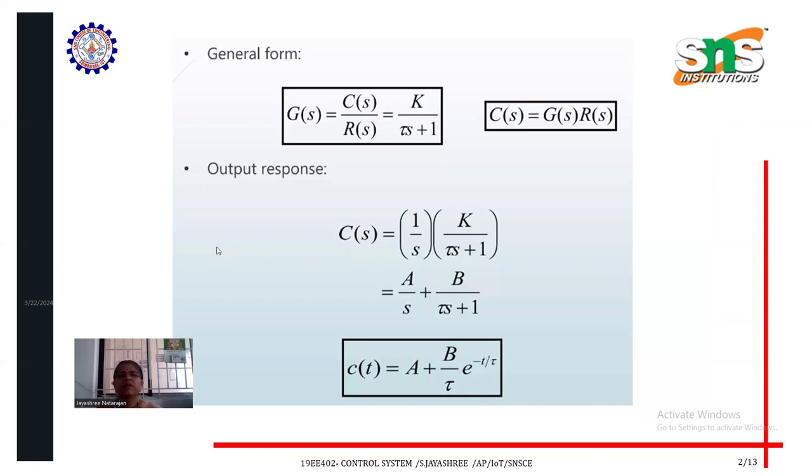The output response C of s equals 1 by s into K divided by tau s plus 1. Here, R of s equals 1 by s because unit step input. To take the Laplace transform, we get 1 by s. So 1 by s into K divided by tau s plus 1.